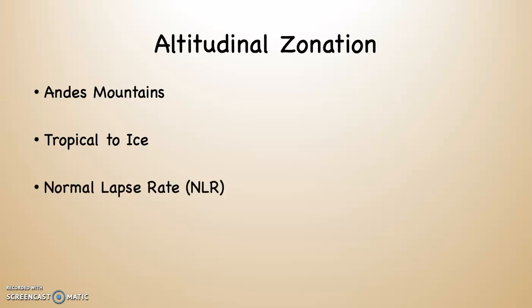These changes are the result of what's known as the normal lapse rate, or NLR. The normal lapse rate describes average temperature change with increasing or decreasing altitude. As you go higher into the atmosphere, air temperature drops off at an average rate of about three and a half degrees Fahrenheit per thousand feet. So at 1,000 feet it's three and a half degrees cooler, at 2,000 feet seven degrees cooler, and at 3,000 feet ten and a half degrees cooler.